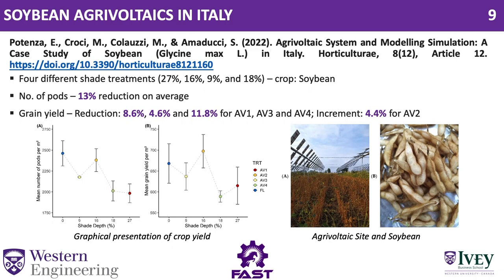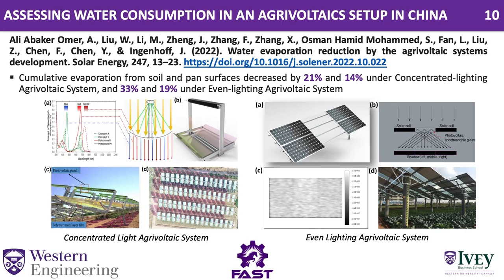Soybeans were tested in Italy under four different shading treatments: 27%, 16%, 9%, and 18% shading. The number of pods for soybean reduced by almost 13%, whereas grain yield reduction ranged from 4.6 to 11% for three configurations. However, one configuration — AB2 at 16% shading level — instead increased soybean yield by about 4.4%.